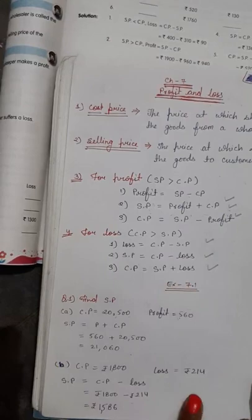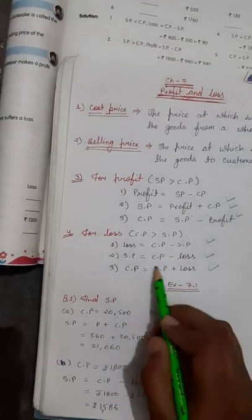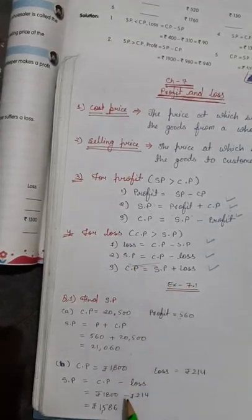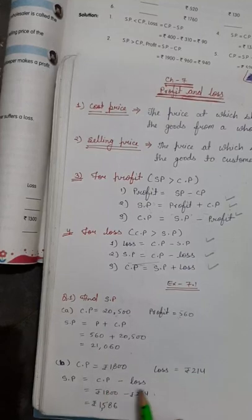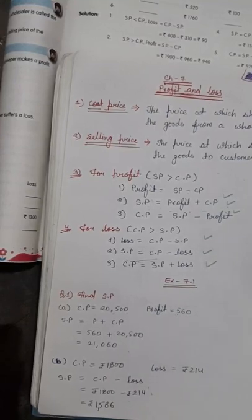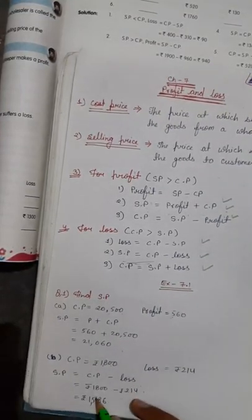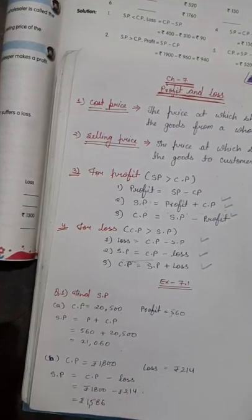Next, part B — based on loss. The formula for SP in the case of loss is: SP = CP minus Loss. Now subtract loss from CP and you will get 1586. Put in the CP value, then substitute the loss value, and after solving you get the answer.